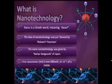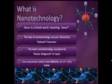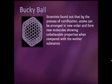One nanometer is one billionth, or 10 to the power minus 9, of a meter. Nanomaterials are found in nature as well — examples include spider web and enamel of teeth. Scientists found out that by the process of nanification, atoms can be arranged in a new order and form new molecules showing unbelievable properties when compared with the mother substance.